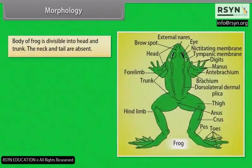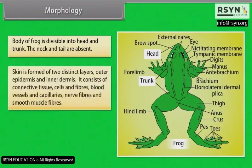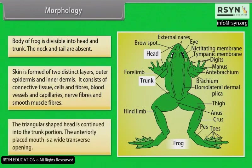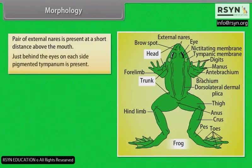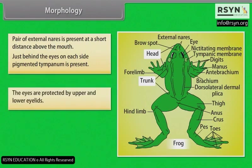Morphology: The body of the frog is divisible into head and trunk; the neck and tail are absent. Skin is formed of two distinct layers — outer epidermis and inner dermis — consisting of connective tissue, cells and fibres, blood vessels and capillaries, nerve fibres and smooth muscle fibres. The triangular-shaped head continues into the trunk. The anteriorly placed mouth is a wide transverse opening. A pair of external nares is present just above the mouth, and just behind the eyes on each side a pigmented tympanum is present.